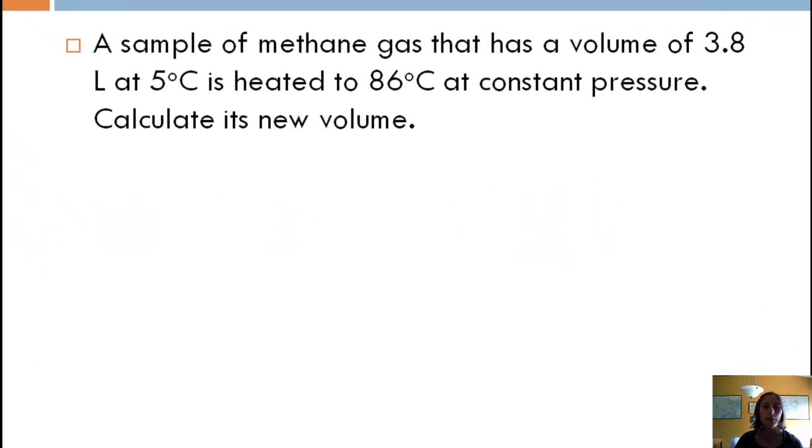Let's look at another one. We have a sample of methane gas that has a volume of 3.8 liters. Its temperature is 5 degrees Celsius, and it's heated to 86 degrees Celsius, so that's our T2. And its pressure is constant, so P1 equals P2, and we want to find our new volume, which is our V2.